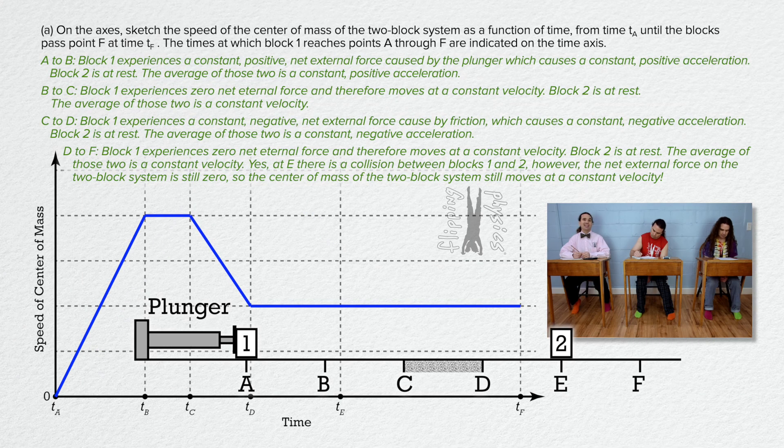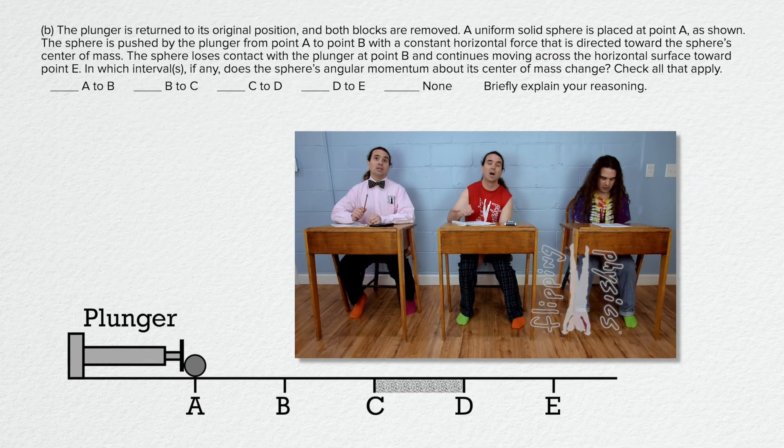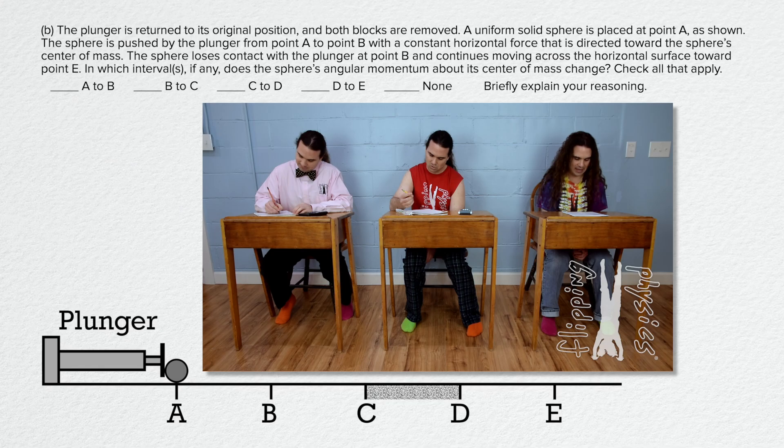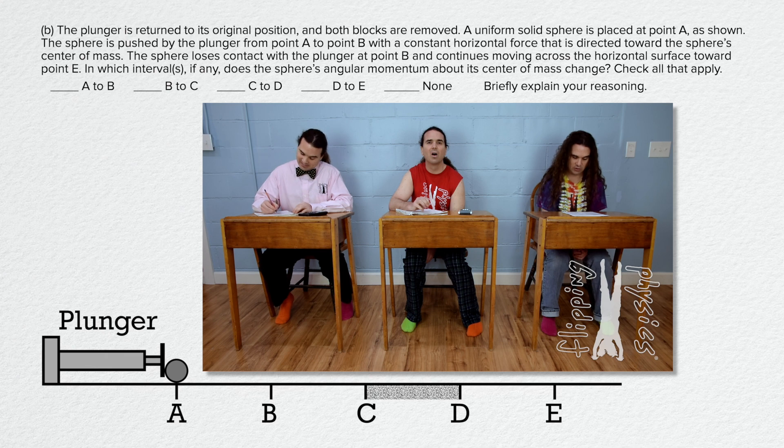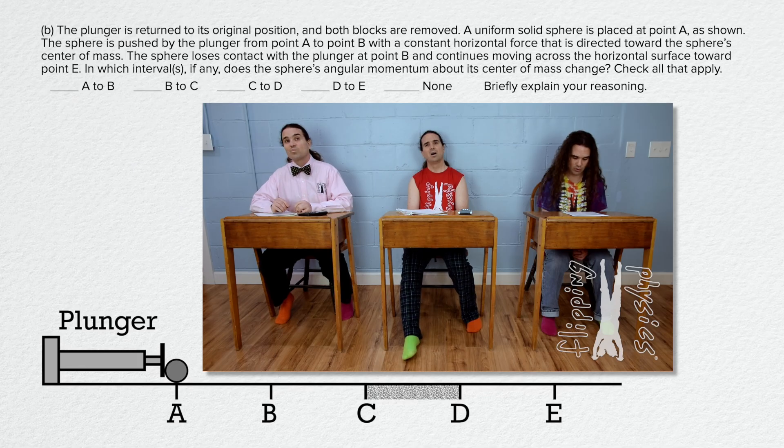Bo, please read part B. Part B. The plunger is returned to its original position and both blocks are removed. A uniform solid sphere is placed at point A as shown. The sphere is pushed by the plunger from point A to point B with a constant horizontal force that is directed toward the sphere's center of mass.